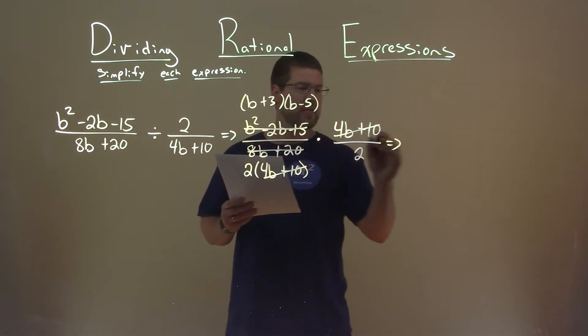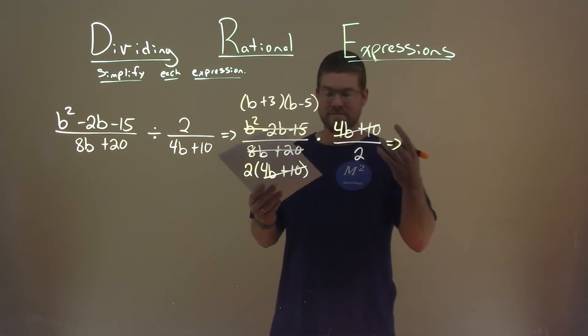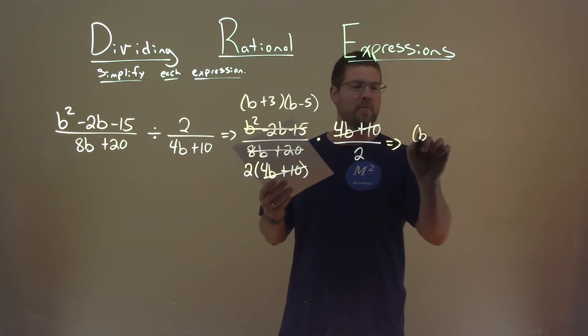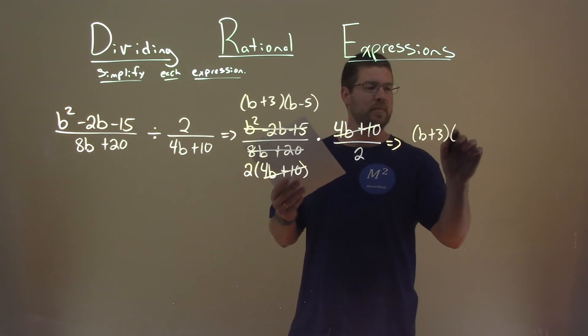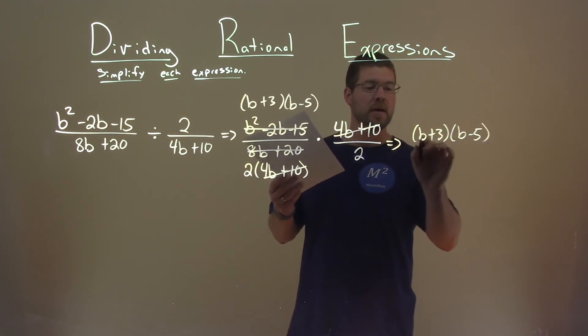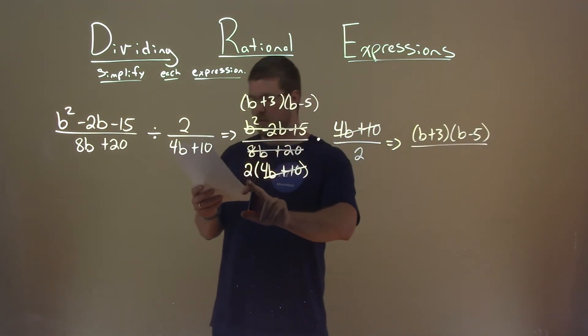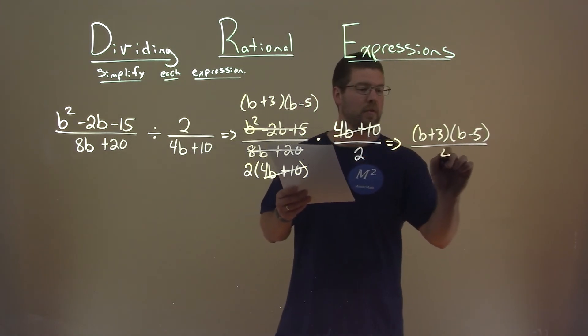So at the top, we still have a factored simplified form, b plus 3 times b minus 5. In the denominator, well, we have this 2 times that 2, which gives us a 4.